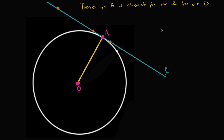To think about that, consider any other arbitrary point on line L — say this point, or this point. You immediately see that it sits outside of the circle. If it's sitting outside of the circle, to get from point O to that point — let's call it point B — you have to travel the length of the radius and then some more. So the length of segment OB is clearly going to be longer than the radius.